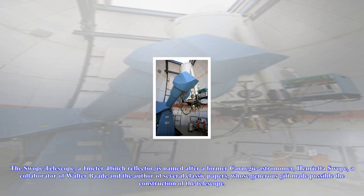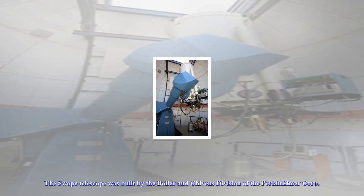The Swope Telescope, a 1-meter 40-inch reflector, is named after a former Carnegie astronomer, Henrietta Swope, a collaborator of Walter Baade and the author of several classic papers, whose generous gift made possible the construction of the telescope.